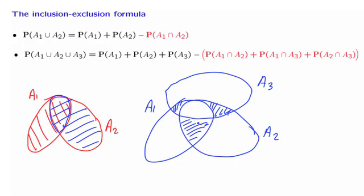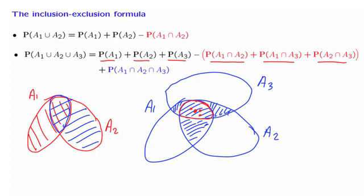The intersections also involve the central part where all three sets overlap. A typical element that belongs to all three sets will show up once in each of the three individual probabilities, and also in all of the pairwise intersections. So it shows up three times with a plus sign and three times with a minus sign, meaning these elements will not be counted at all. In order to count them, we need to add one more term: the probability of the three-way intersection. You can verify this formula is correct by checking each piece of the diagram is accounted for properly.